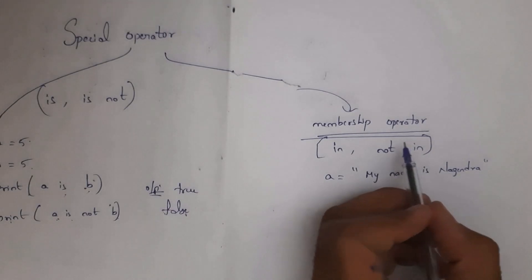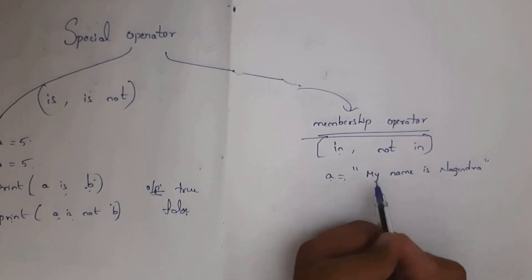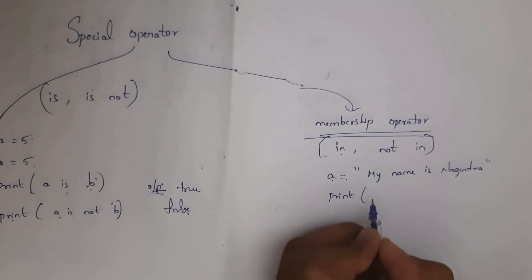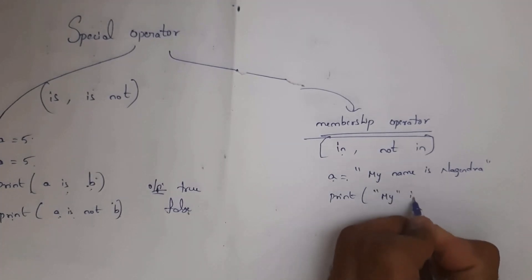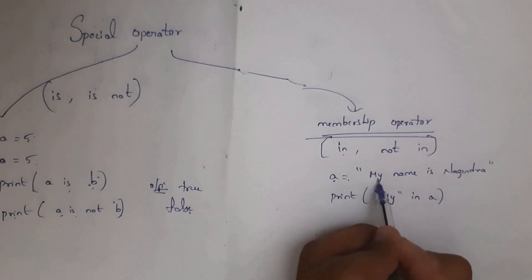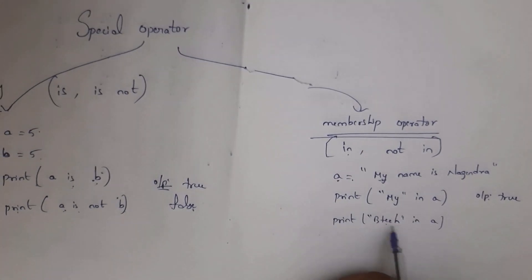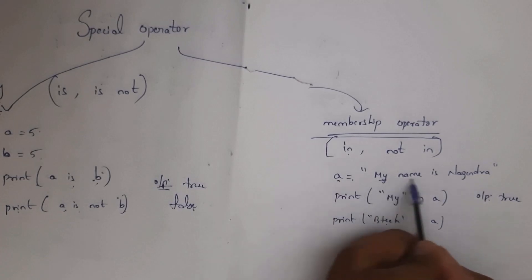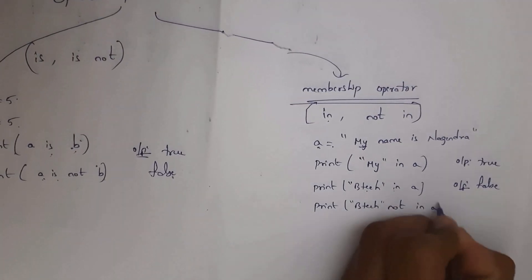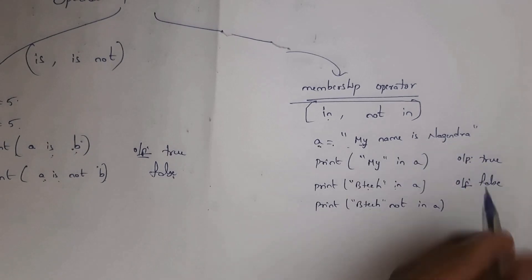The membership operator contains 'in' and 'not in'. For example, a = 'my name is nagendra'. Checking 'my' in a — yes, 'my' is present, so result is True. Checking 'b tech' in a — 'b tech' is not present in the string, so result is False. Checking 'b tech' not in a — yes, 'b tech' is not present, so result is True.